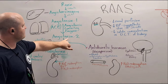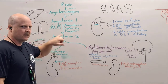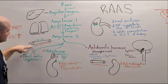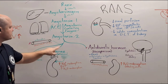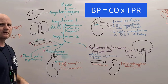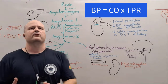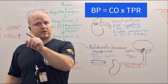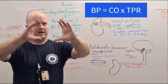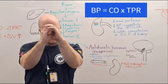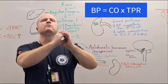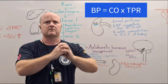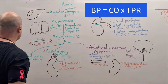When we have angiotensin 2, this is where the magic happens. Number one, it's going to cause vasoconstriction of our arterioles. If we remember our blood pressure equation — blood pressure equals cardiac output times total peripheral resistance — if we have vasoconstriction, that's going to increase our total peripheral resistance. More squeeze, more blood pressure. So we're winning already.